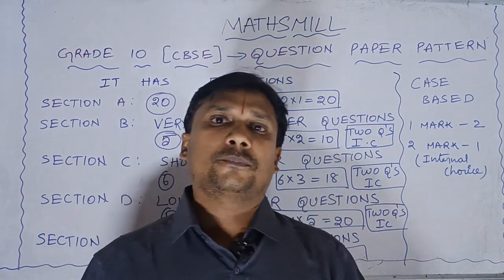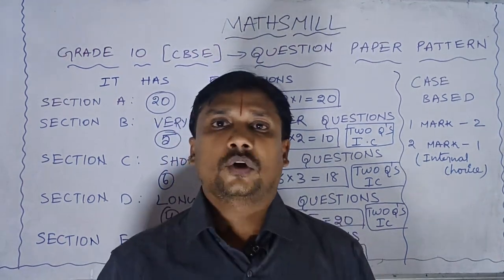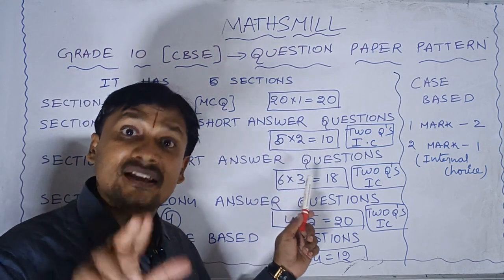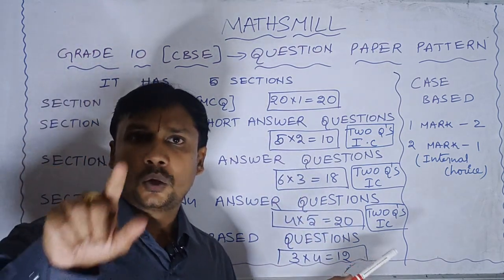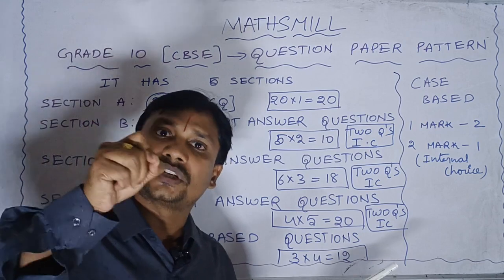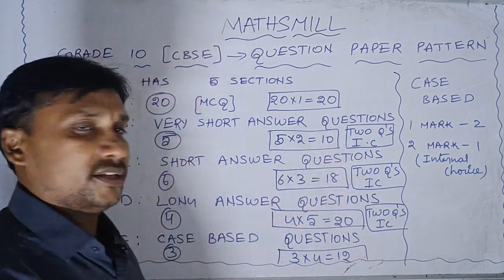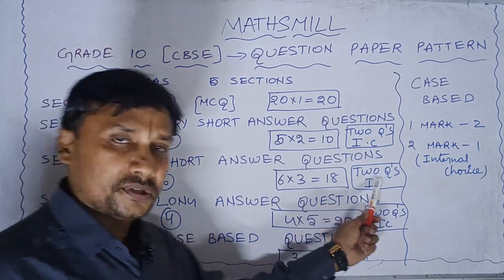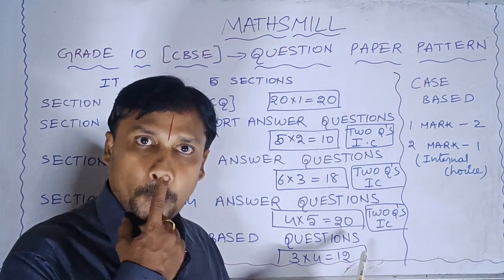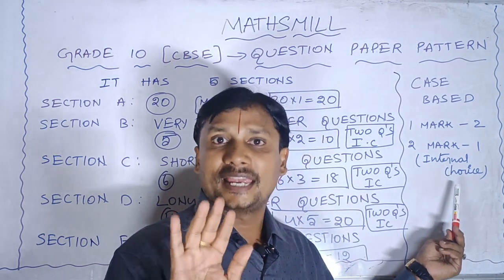Coming to the internal choice: in each section, except unseen portions, there is internal choice. For example, in Section B, out of 5 questions, 2 questions have internal choice — meaning the alternative question is from the same topic, like linear equations. Similarly, Section C has 2 questions with internal choice, and Section E also has 2 questions with internal choice. In Section D, 1 question has internal choice.